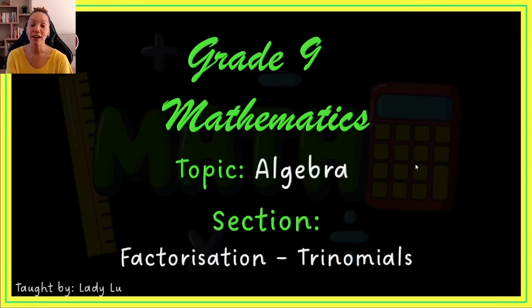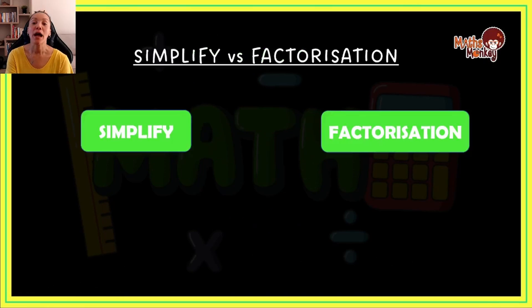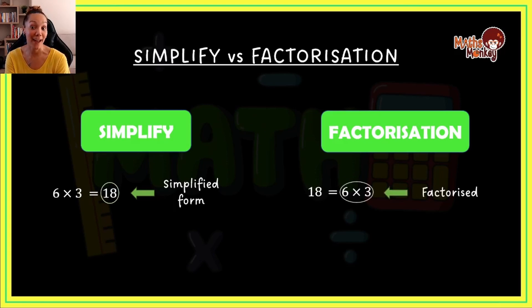This is your lesson on algebra where I'll be teaching you how to factorize trinomials. I like to always make sure you understand what the difference is between simplification and factorization so that you know when you need to do what. If we think of simplifying, a simple example like 6 times 3 gives you 18, the 18 is the simplified form. Then if you have 18 and we put it in its factors, then 6 times 3 is the factorized form. The same works for algebra.